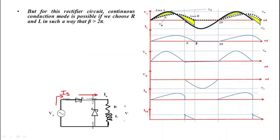When the voltage polarity reverses after π, the positive potential reaches the anode of the freewheeling diode, which then becomes forward biased and acts as a short circuit. The output current i0 shifts from the main diode to the freewheeling diode. The output current now freewheels through the loop consisting of resistance R, inductance L, and the freewheeling diode. Once the current shifts to this loop, no current flows through the main diode.